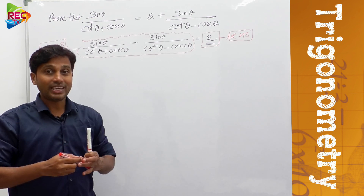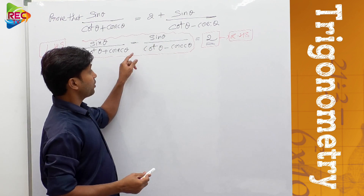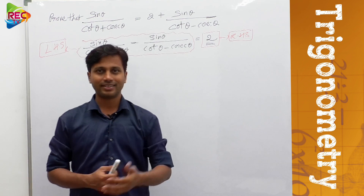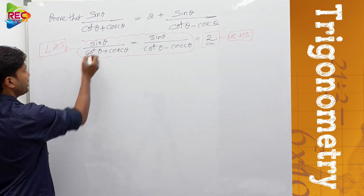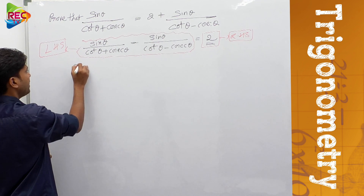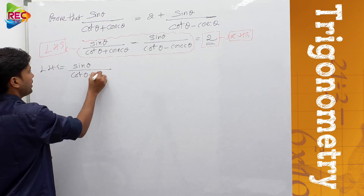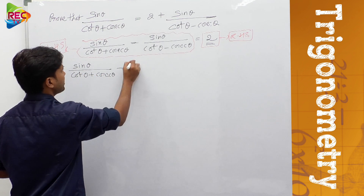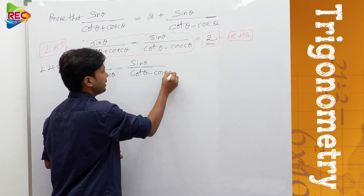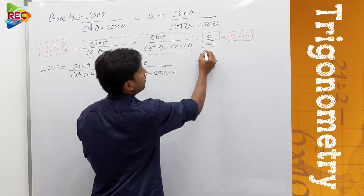After rearranging the terms of the given equation, we are going to take this entire expression as LHS and we need to obtain RHS which is 2 — and of course it looks very easy to get. So LHS is: sin θ/(cot θ + cosec θ) minus sin θ/(cot θ - cosec θ). Now we need to obtain this RHS.